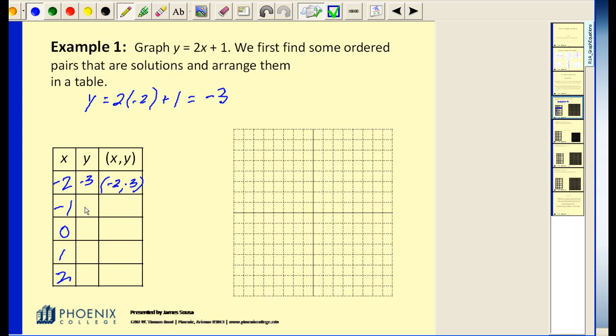When x is negative 1, we're going to follow the same procedure. And you can check me, but y would be negative 1. And now we're going to let x equal zero. It would result in a y value of 1, ordered pair zero, 1. When x is 1, y is 3. And when x is equal to 2, y would be 5.